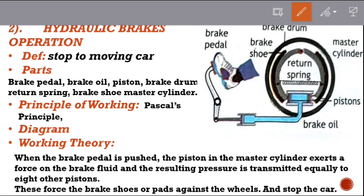The hydraulic brake is used to stop or slow down moving vehicles. The parts of the hydraulic brake system include: brake pedal, brake oil, piston, drum, return springs, brake shoes, and master cylinder.